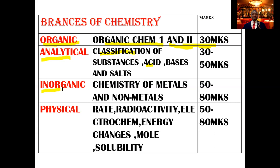Then we have inorganic chemistry, which covers the chemistry of metals and non-metals. Most of the topics in chemistry fall under this branch — the chemistry of metals, chlorine, nitrogen, sulfur, carbon, and the periodic table. This topic carries between 50 to 80 marks, so it is a very important area to revise well. Then we have physical chemistry, which covers rate, radioactivity, electrochemistry, energy changes, the mole, and solubility. This branch also carries between 50 to 80 marks.